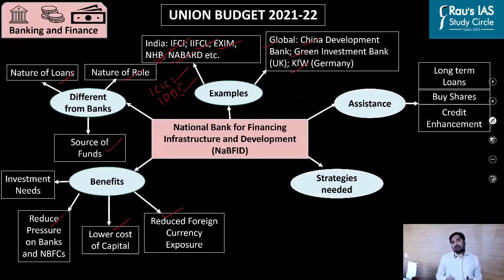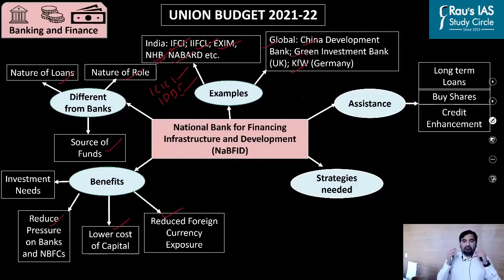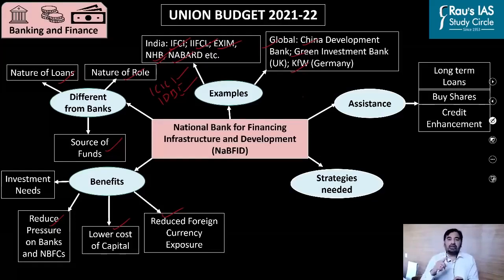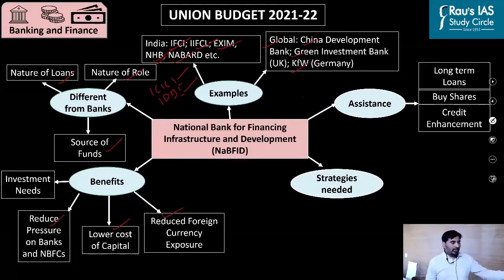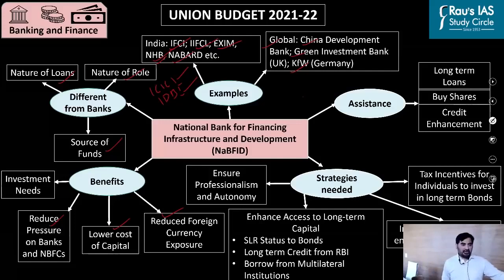So what should be done to ensure the success of development banks? First, there must be no political interference. Second, these banks should be professionally managed. Third, they should have strong internal control and audit mechanisms. Unless these are ensured, development banks will go the way of public sector banks and fail. The key strategy is to ensure professionalism and autonomy.